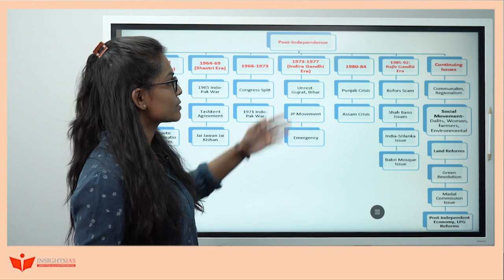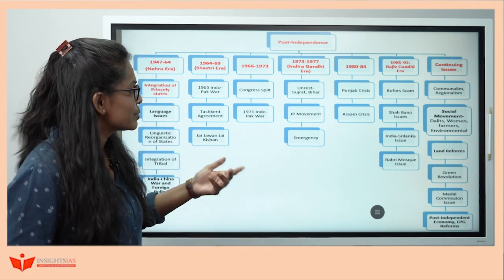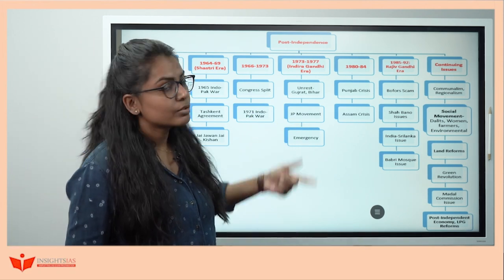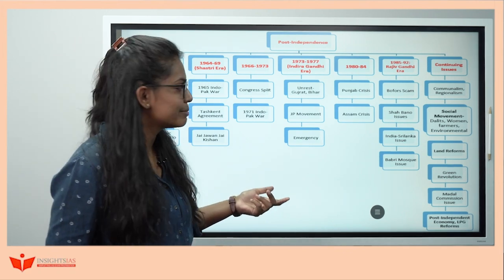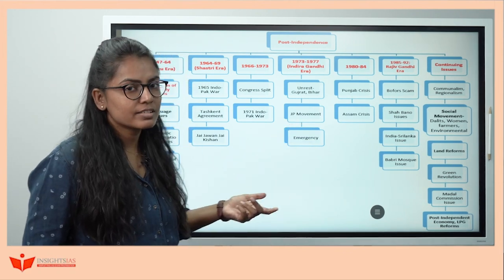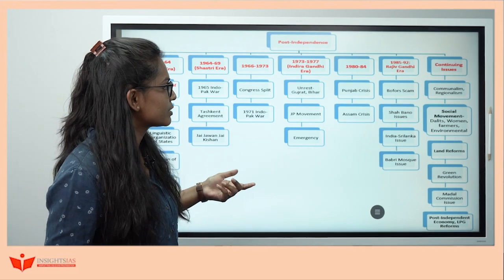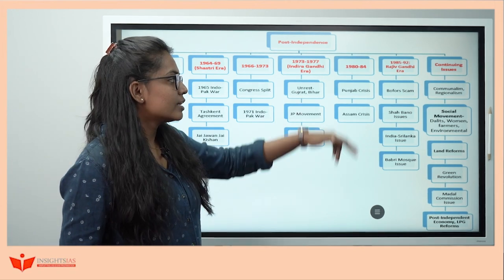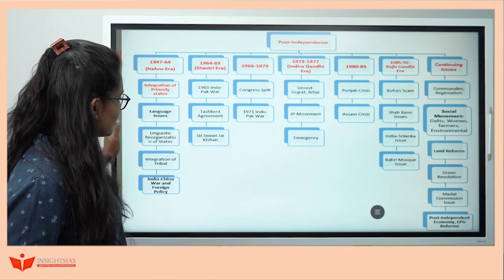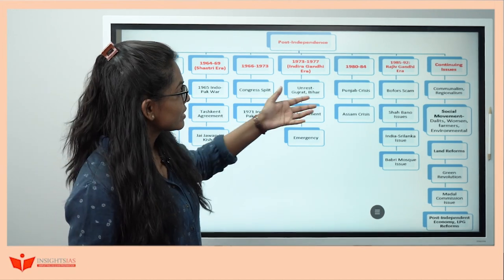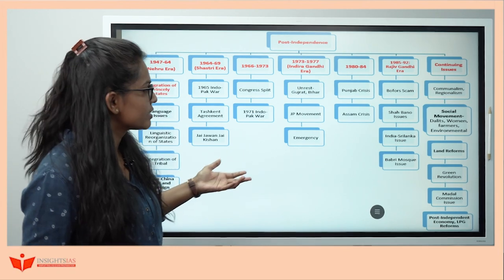In the Rajiv Gandhi era, there was the Bofors scam — a weapons deal scandal between India and Sweden — the Shah Bano case regarding maintenance for divorced Muslim women, the India-Sri Lanka issue and the LTTE issue, then the Babri Masjid issue. Continuing issues include communalism and regionalism, which were present before and still persist, along with social movements around Dalits, women, and farmers.